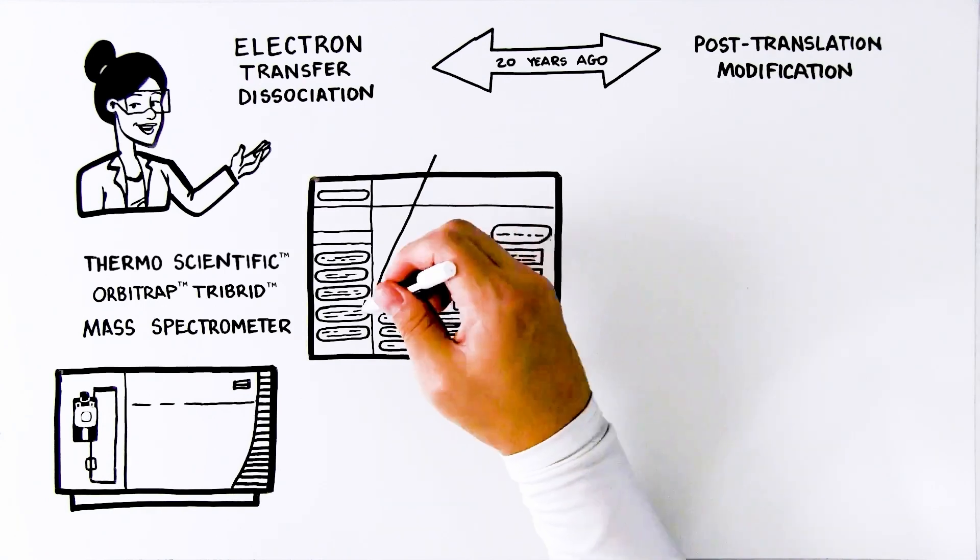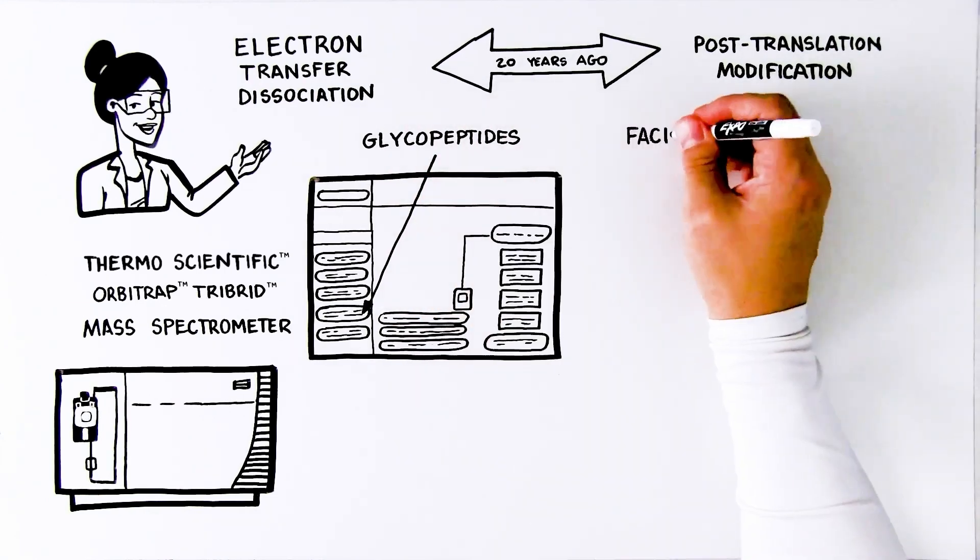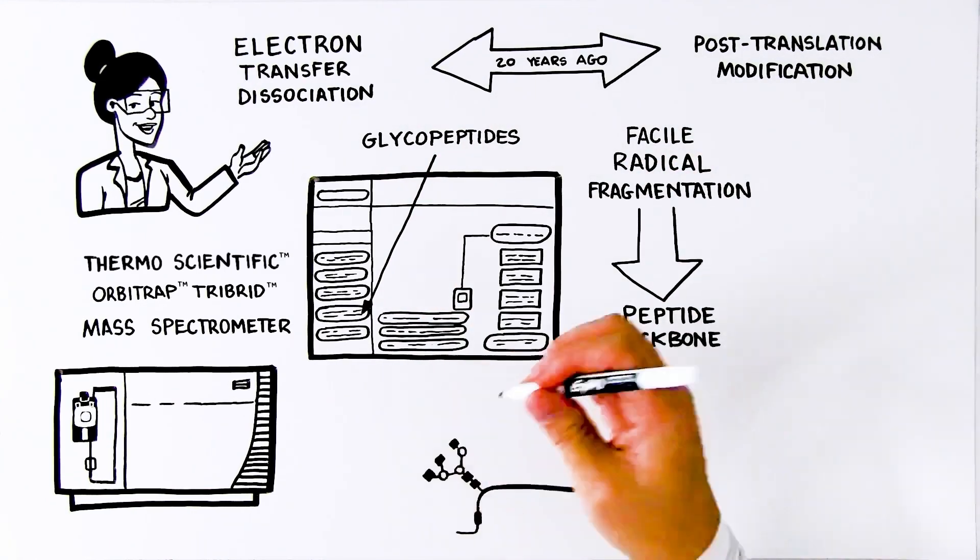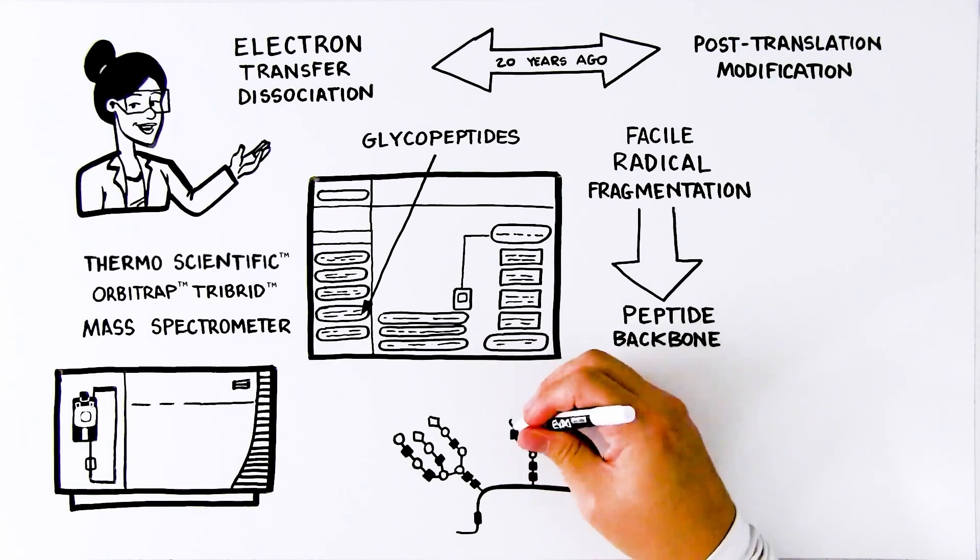ETD differs from traditional collision-based fragmentation techniques by providing a facile, radical-based fragmentation of the peptide backbone that preserves labile modifications.